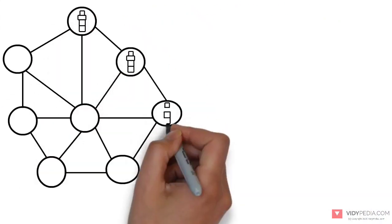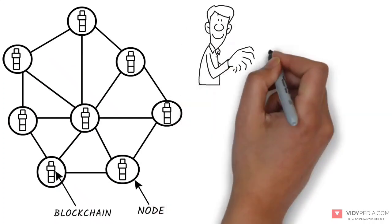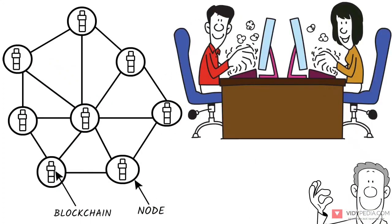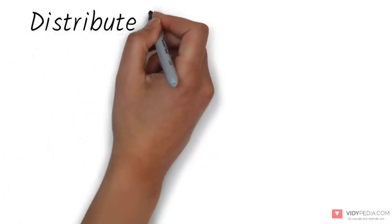By design, a blockchain is resistant to modification of its data. It's an open, distributed ledger that can record transactions between two parties efficiently and in a verifiable and permanent way. For use as a distributed ledger,